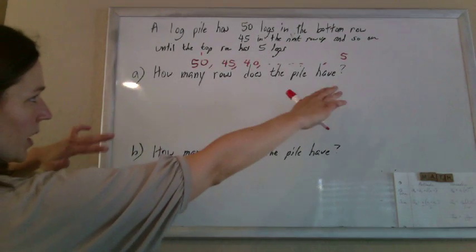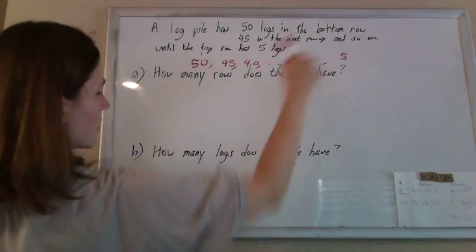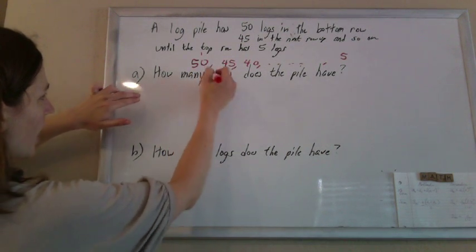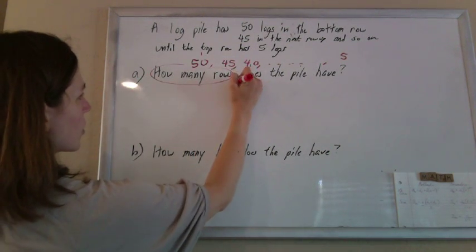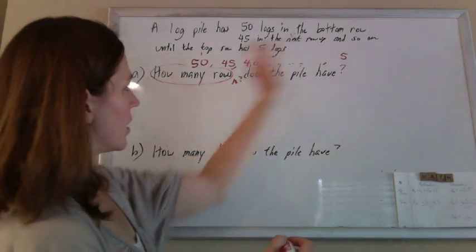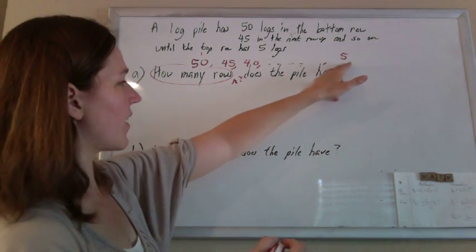Now you can see that this is an arithmetic sequence and d is negative 5 because we keep subtracting 5. In this case they want to know how many rows, so we're looking for what n is, the number of terms until we get to 5.